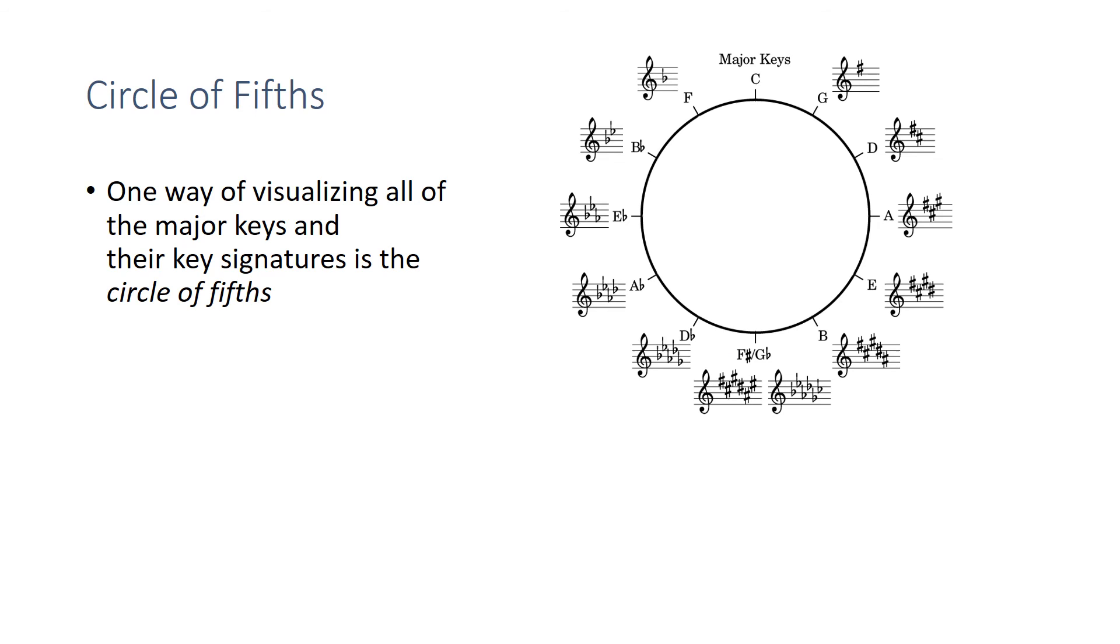One way you can visualize all of the major keys at once, and their key signatures, is to use a circle of fifths. This also works for minor keys, as we'll see later. The keys going around the outside of the circle here are related by fifths. If we go in a clockwise direction, we go up a fifth, or five steps: C-D-E-F-G, G-A-B-C-D, and so on.